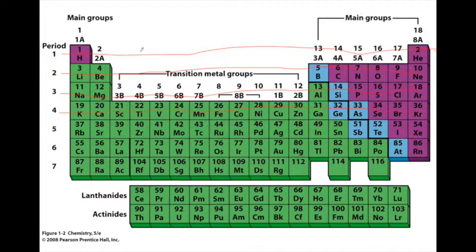And so the periods are basically arranged in order of increasing atomic number with hydrogen having atomic number one, helium atomic number two, etc.